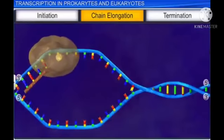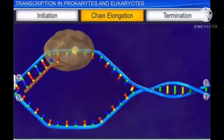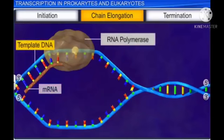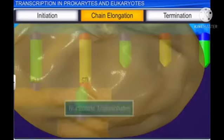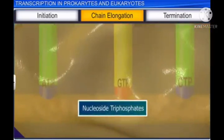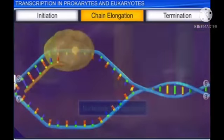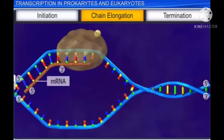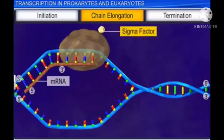Now the second stage of transcription called elongation begins. In this stage, the RNA polymerase builds a strand of RNA using one of the DNA strands as a template. RNA polymerase uses nucleoside triphosphates as substrates and polymerizes using the law of complementarity. This RNA chain growth takes place in the 5' to 3' direction. After chain elongation commences, the sigma factor dissociates from the RNA polymerase and can be reused.